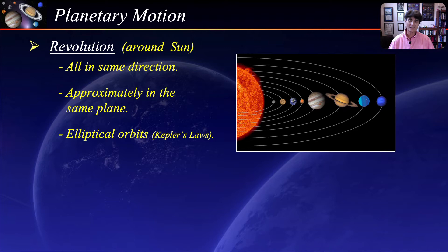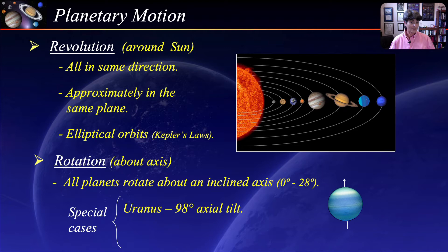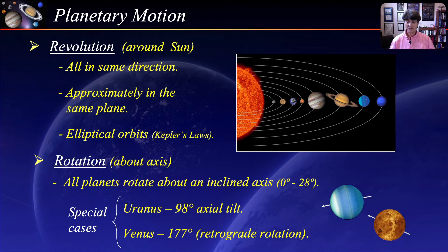The other motion is rotation about their axis. All planets rotate about an inclined axis of rotation. Most planets are inclined somewhere between zero and 28 degrees, but there are two special cases. Uranus has an axis of inclination of 98 degrees, so it sort of rolls along its orbit. Venus's axial tilt is 177 degrees, so it is basically upside down. All other planets rotate counterclockwise as viewed from the north celestial pole, but Venus rotates clockwise.